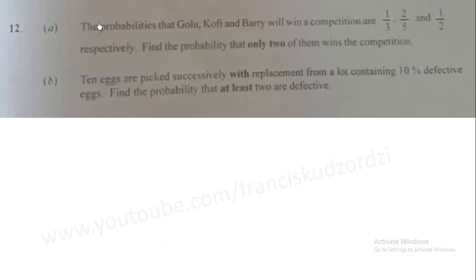Question 12. The probabilities that Golu, Kofi and Barry will win a competition are 1 over 3, 2 over 5, and 1 over 2 respectively. Find the probability that only two of them win their competition. Let's do that part.